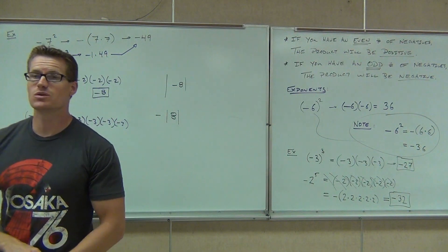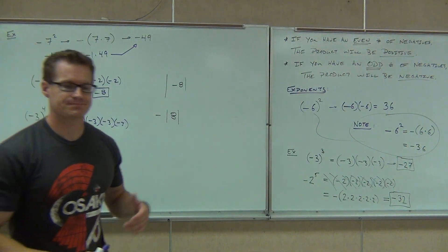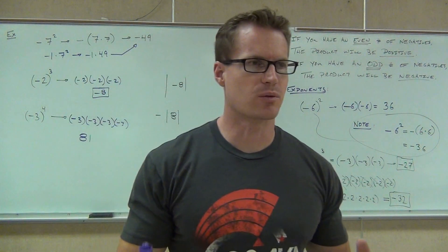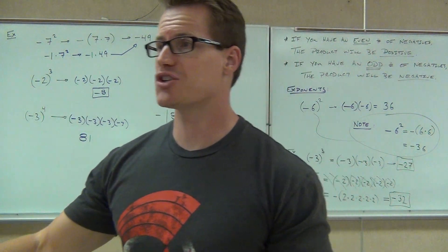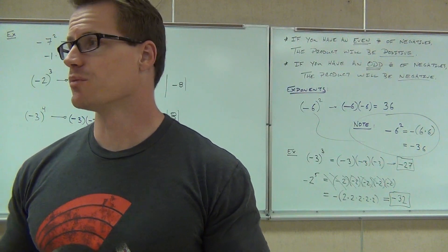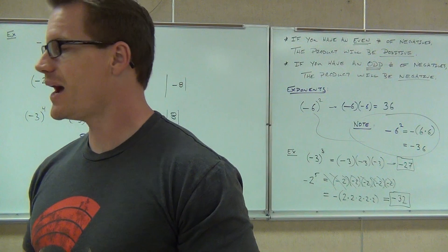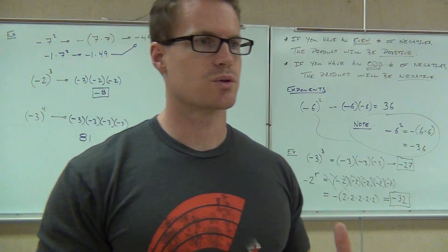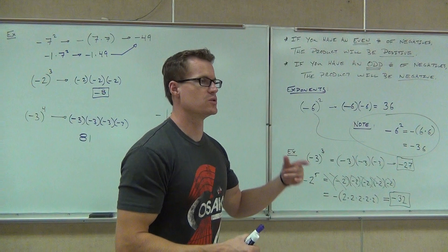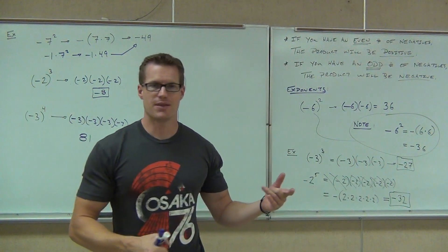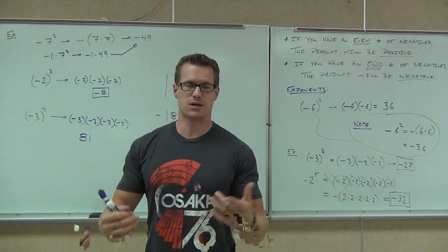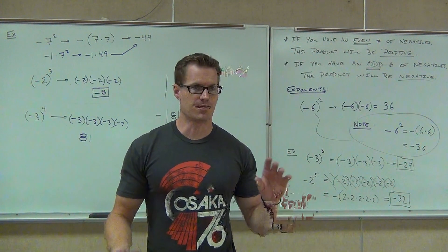The last thing we get to do in this section — we've done addition and subtraction, that's basically the same thing once you change the signs, and we've done multiplication. Division is going to be very similar to multiplication. In fact, we have exactly the same rules. We just have to divide numbers like we normally would and know the signs.